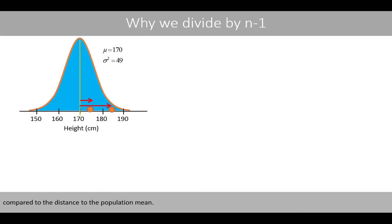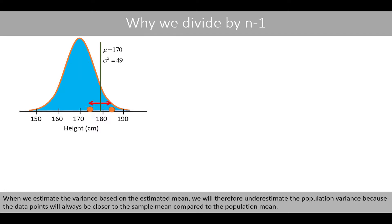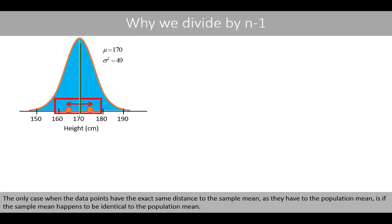This means that the distance of the data points to the sample mean will always be shorter compared to the distance to the population mean. When we estimate the variance based on the estimated mean, we will therefore underestimate the population variance because the data points will always be closer to the sample mean compared to the population mean. The only case when the data points have the exact same distance to the sample mean as to the population mean is if the sample mean happens to be identical to the population mean.